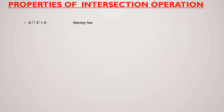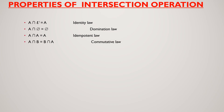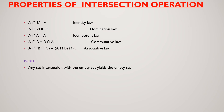Next are the properties of intersection. If you take the intersection of a set with its universal set, you get the set itself — the identity property. For the domination law here, taking intersection with the empty set gives the empty set. Intersection with the set itself gives the same set, and commutative and associative laws also hold.